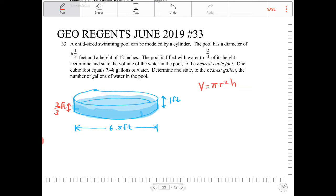We need to find the volume of the water in the pool. The height of the water is two-thirds, and the radius is half of 6.5, which is 3.25.